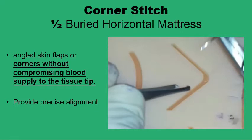The three-point junction suture is different from the corner stitch. We use a corner stitch when you have a defect with two sides, one of which is angled with potentially reduced blood supply. In contrast, the three-point junction suture is used when there are three or even more different flaps all meeting at one point. The corner stitch is basically a half-buried horizontal mattress suture, with the suture material on the surface on the wider side of the wound and deeper to the surface on the angled side, to avoid compromising the already reduced blood supply to the tip.